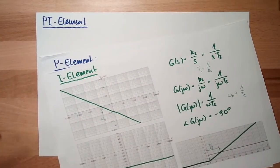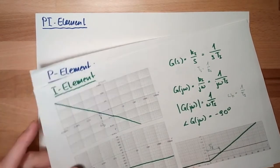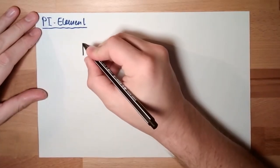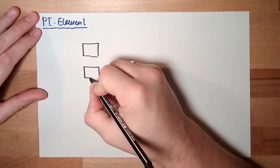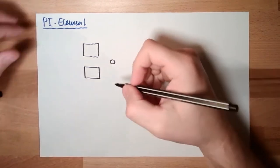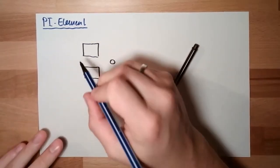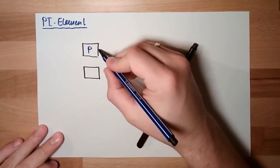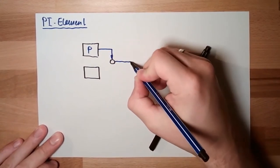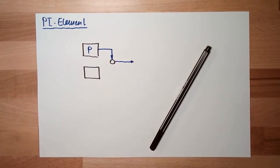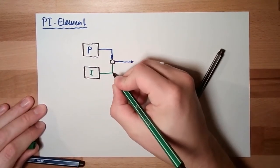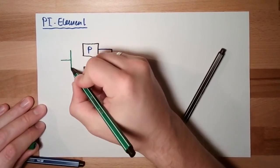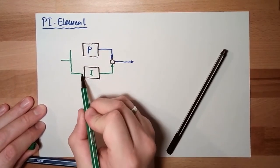Similar — very similar to the pd element — it consists of two parts, and both parts are summarized. So there is the p part, there is the i part, and of course there is the input, which will reach both.